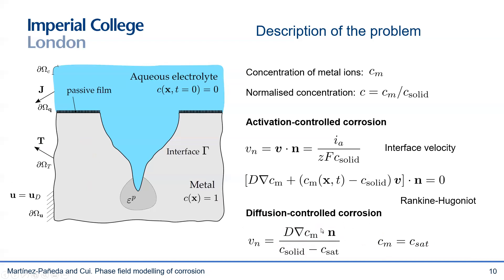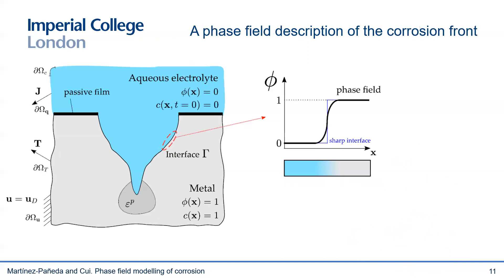So modeling corrosion at the continuum requires applying both a Robin boundary condition, as given by the Rankine-Hugoniot condition, and the Dirichlet boundary condition. And this must be imposed while the interface evolves. So we have abrupt changes in boundary conditions that might be prescribed on a moving interface — quite a difficult computational problem to tackle, particularly in 3D. And here is where the phase field comes to our rescue.